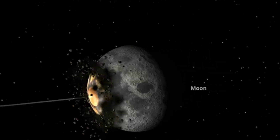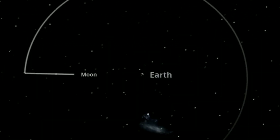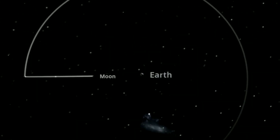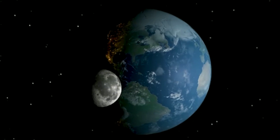So while a single comet cannot significantly alter a planet's rotational axis, a collision with a moon-sized object could.